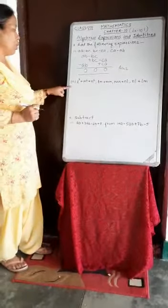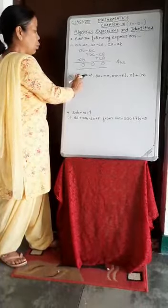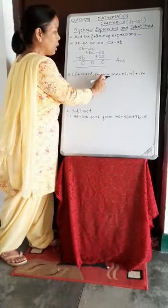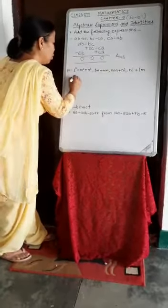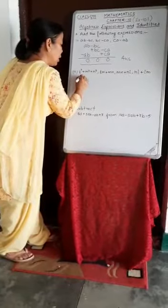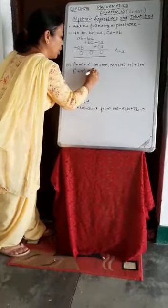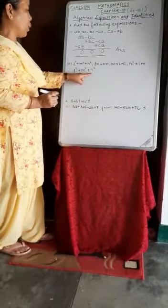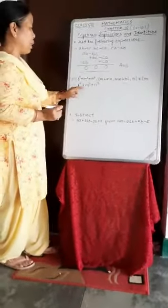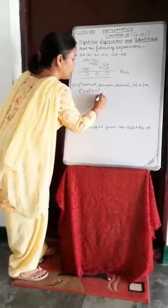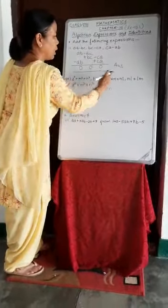Now take another example, which is the third part of question number 3. The expressions are: LM² + MN + NL, LN + MN, and MN + NL + NL. We will write these expressions in column form as before. We write LM² + MN + NL first. LN and MN are not in the next expression, so they will be written separately as LN plus MN.